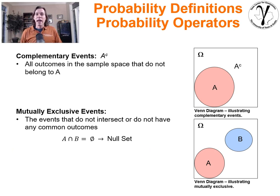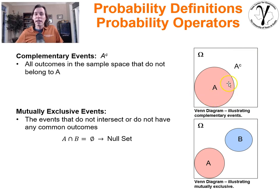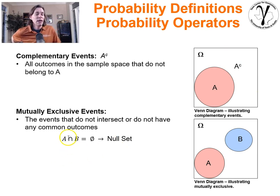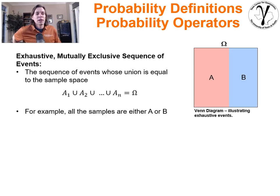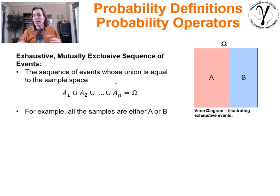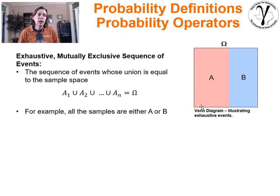If A can occur, A can also not occur — so A complement is the probability of A not occurring. Everything in the omega area that's not in A is A complement. Mutually exclusive events are ones for which the intersection is a null set — there are no cases where both happen at the same time, so the joint probability is zero. Exhaustive mutually exclusive events mean A and B fill the entire realm of possibility with no white space remaining in the Venn diagram, and they don't overlap with each other.